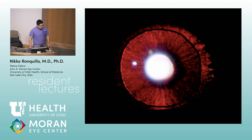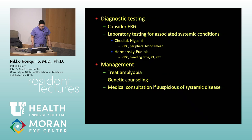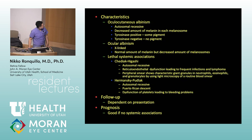Next — albinism. Key findings: foveal hypoplasia. Oculocutaneous versus ocular forms. Important systemic associations: Chediak-Higashi syndrome (neutropenia, recurrent infections) and Hermansky-Pudlak syndrome (platelet dysfunction, bleeding, associated with Puerto Rican populations). Both conditions bleed, but Chediak-Higashi also causes neutropenia.